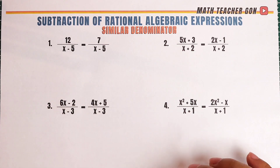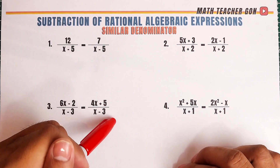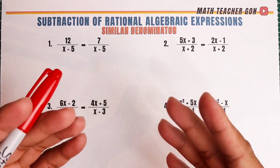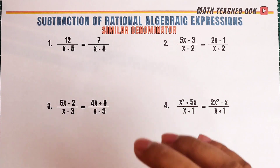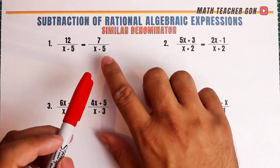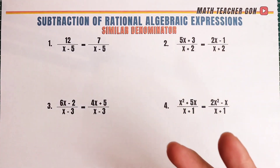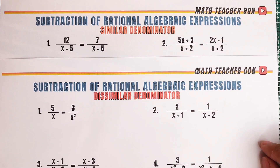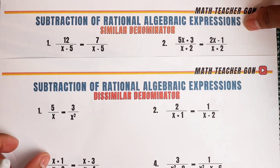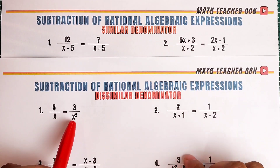Hi guys, it's me, Teacher Gwen. In this video, we will talk about subtracting rational algebra expressions with similar and dissimilar denominators. In the first part, we have similar denominators — meaning they have the same denominators. And in the second part, we will do rational algebra expressions with dissimilar denominators, meaning the denominators are different.